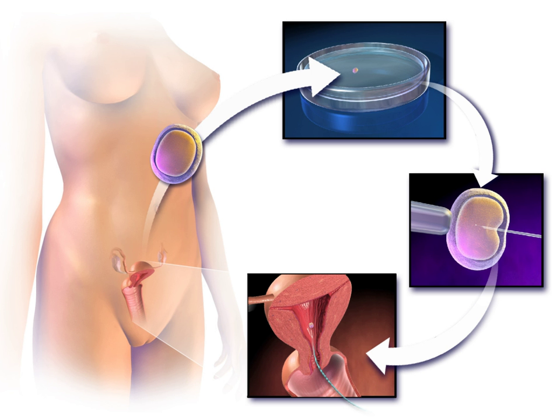Assisted Reproductive Technology (ART) are medical procedures used primarily to address infertility. It includes procedures such as in vitro fertilization, intracytoplasmic sperm injection, cryopreservation of gametes or embryos, and may involve the use of fertility medication. When used to address infertility, it may also be referred to as fertility treatment. ART mainly belongs to the field of reproductive endocrinology and infertility.